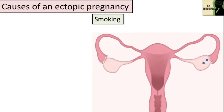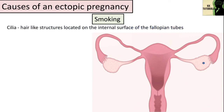Smoking is another important risk factor. Women who smoke have a higher chance of an ectopic pregnancy in the fallopian tubes. The fertilized egg is carried to the uterus via cilia — hair-like structures located on the internal surface of the fallopian tubes. Smoking leads to the risk of damaging and killing cilia.